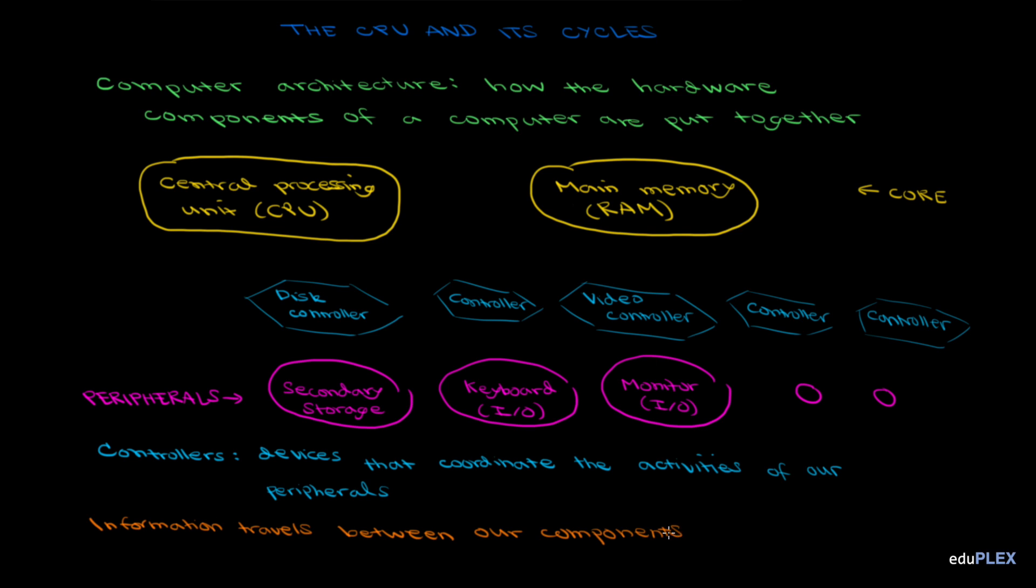Information travels between our components across a group of wires called a bus. So that'd look like this, with a wire connecting our CPU and RAM, a wire connecting our core to our controllers, and wires connecting the controllers to the peripherals.